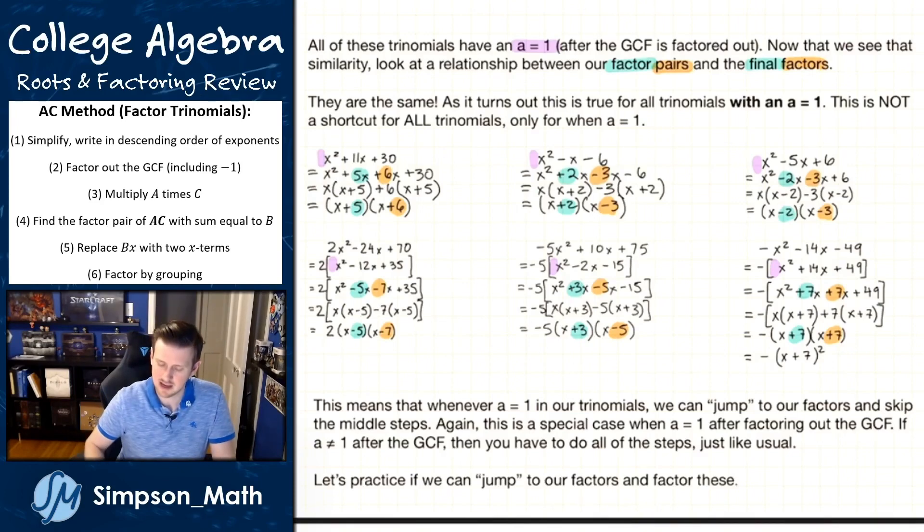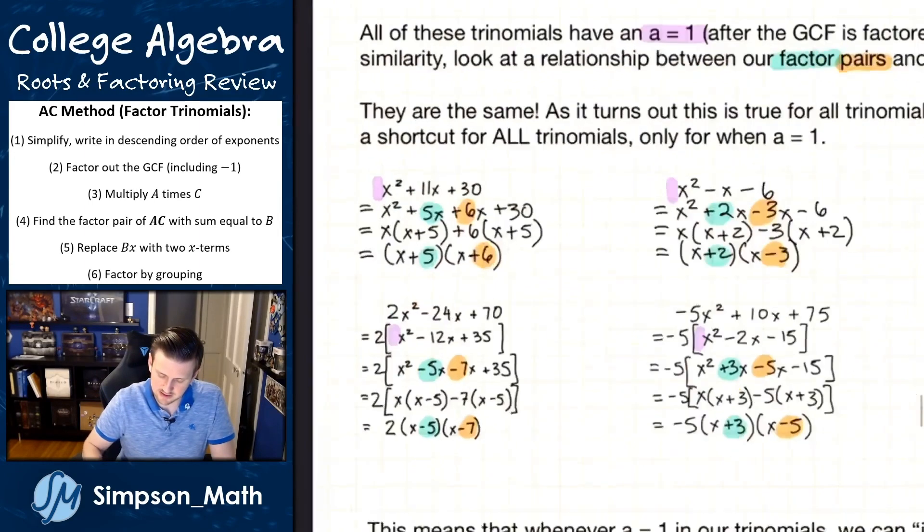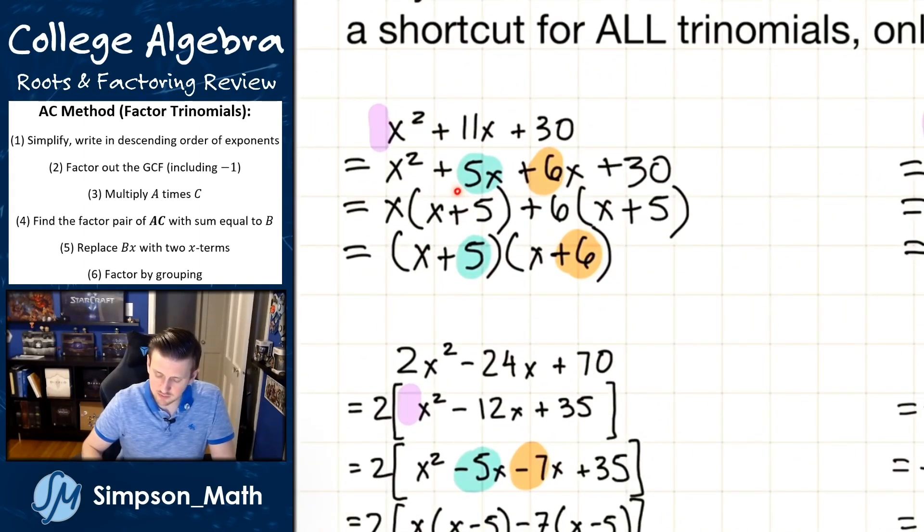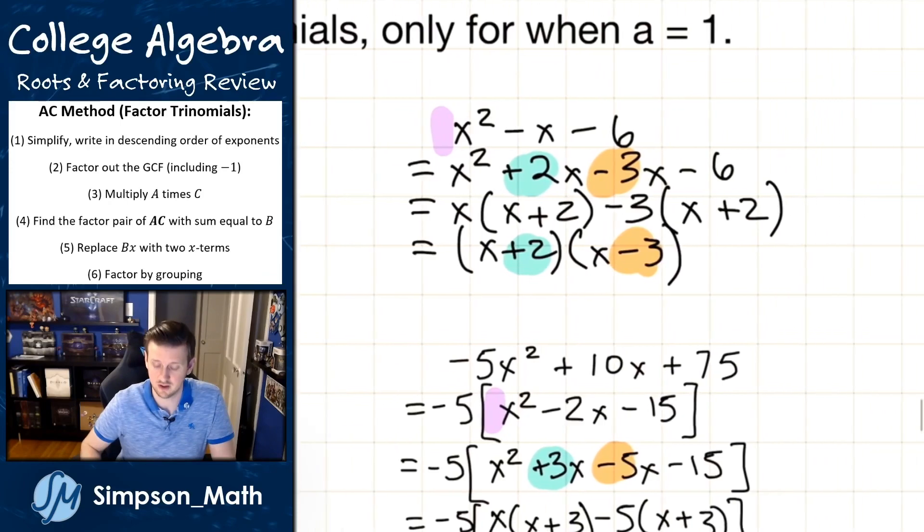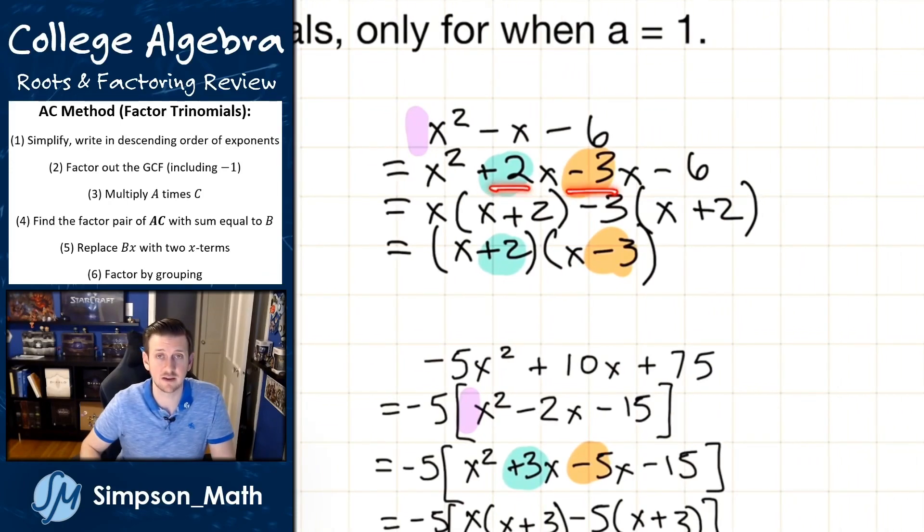But now let's look a little bit harder at the factor pairs. So look at this one. So we have a 5x and a 6x, and look what I end up with: x + 5, x + 6. Over here, I have a 2x and a negative 3x for my factor pairs. Look at my factors: x + 2, x - 3.